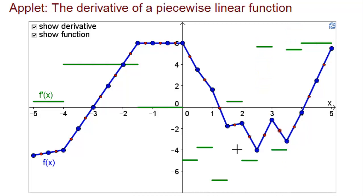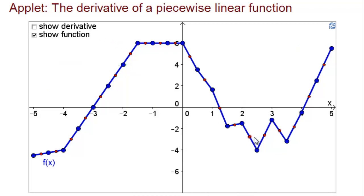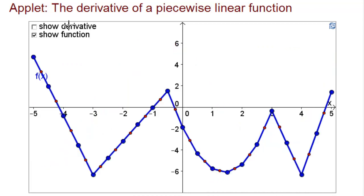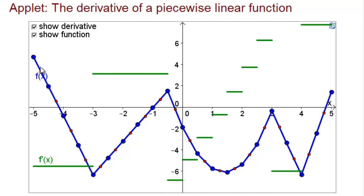You can use this applet to test how well you understand how the derivative works. For example, we can hide the derivative and change the function f, then see if you can figure out what the derivative should look like. Once you've formulated your guess, you can click the show derivative button again and see how well you did. For this example, the tricky part was the region where the slope started being very negative and then slowly increased, ending up with a large positive slope.